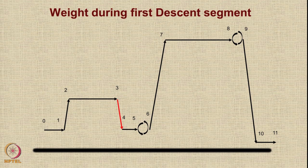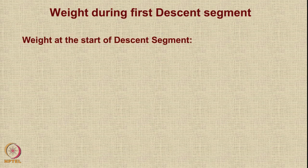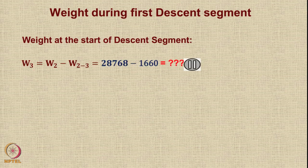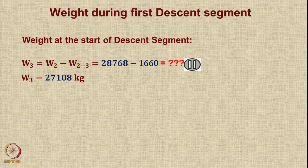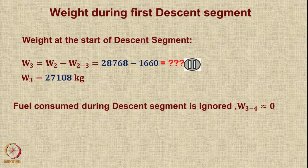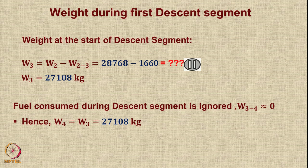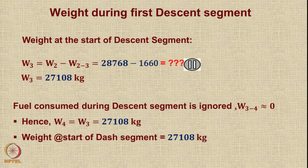In the descent segments, we ignore fuel consumed and distance travelled. The weight at the start of the first descent equals the weight at the end of the first cruise: 28,768 − 1,660 = 27,108 kg. Since no fuel is consumed in descent, W4 = W3 = 27,108 kg. The weight at the beginning of the dash segment is also 27,108 kg.